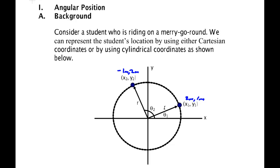But if I use polar coordinates, where position is described in terms of a radius and an angle, then as this particle moves around the circle the radius doesn't change — only the angle changes. So I only need one equation; it's a one-dimensional problem, greatly simplifying my work.